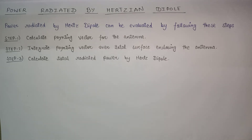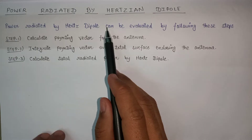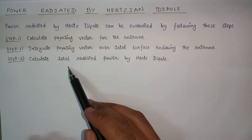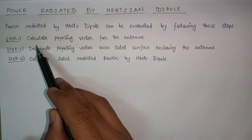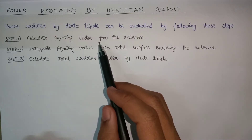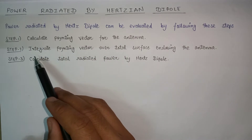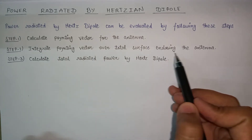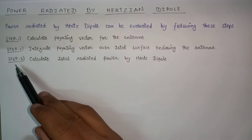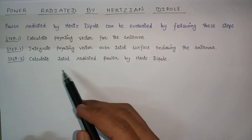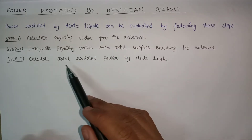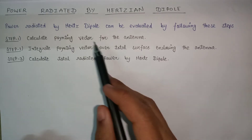In this lecture we are going to discuss the power radiated by the Hertzian dipole. This can be evaluated by following three steps: step one, calculate the Poynting vector for the antenna; step two, integrate that Poynting vector over the total surface area enclosing the antenna; and step three, calculate the total radiated power by the Hertzian dipole.